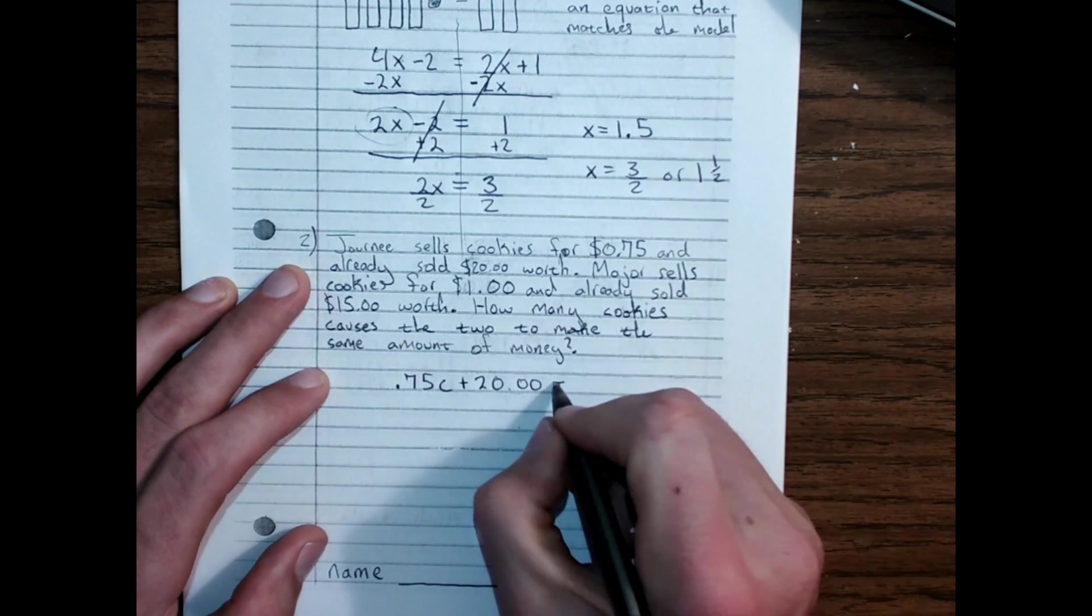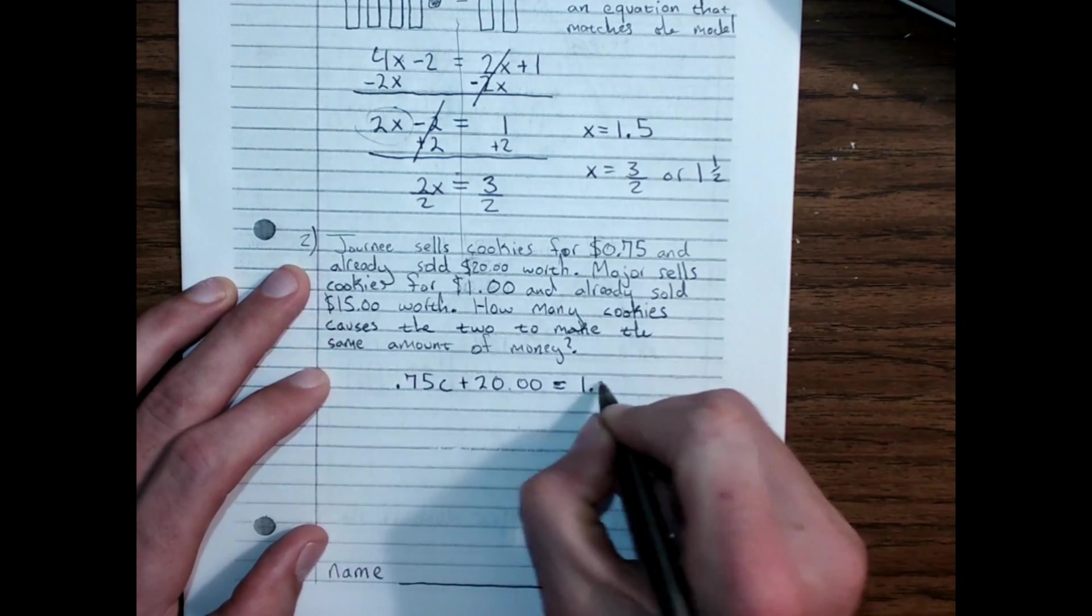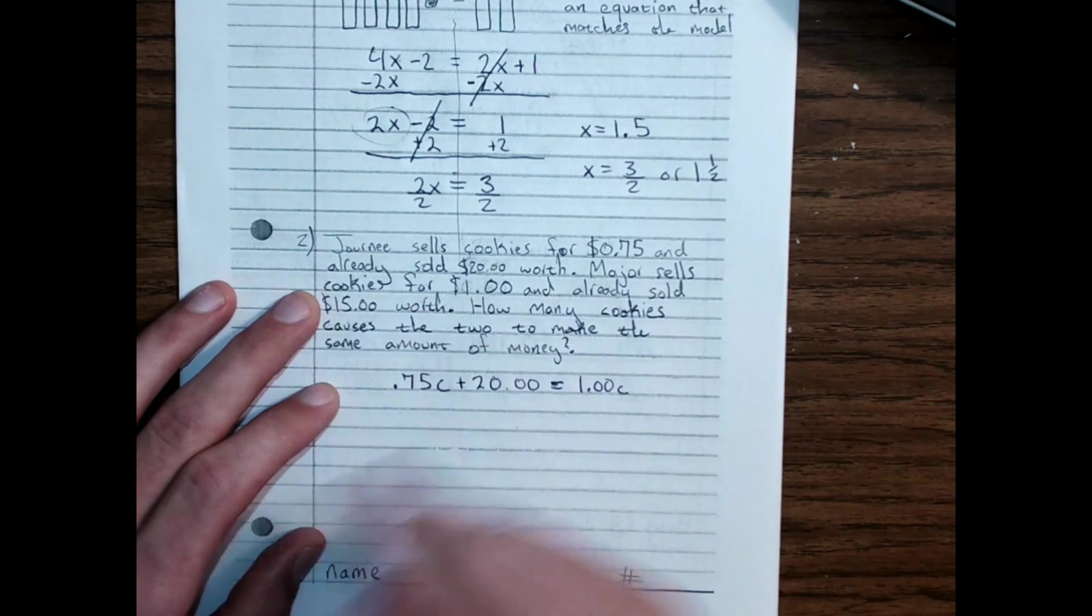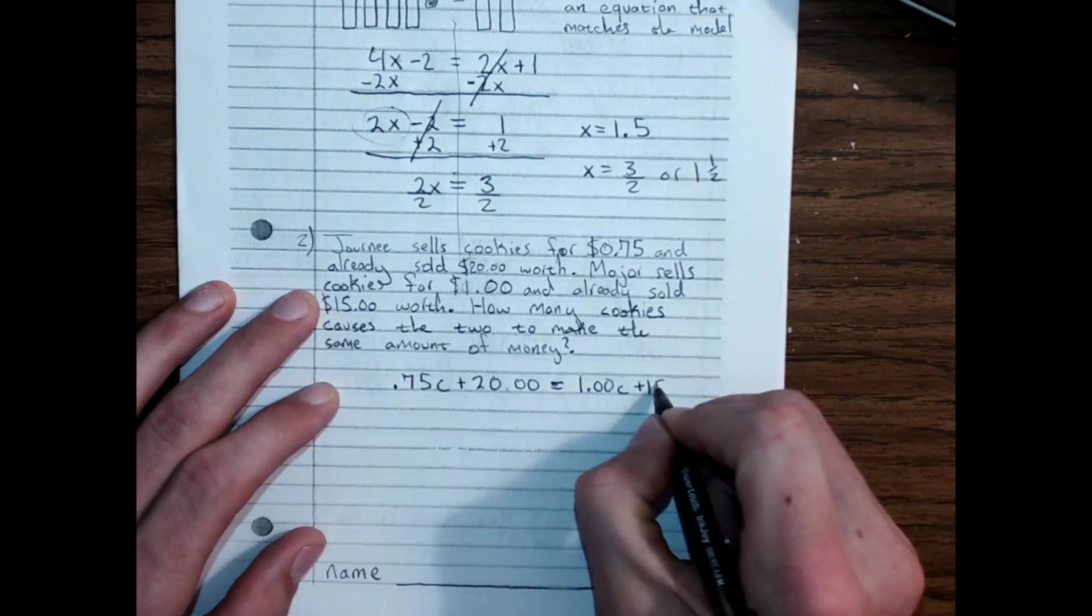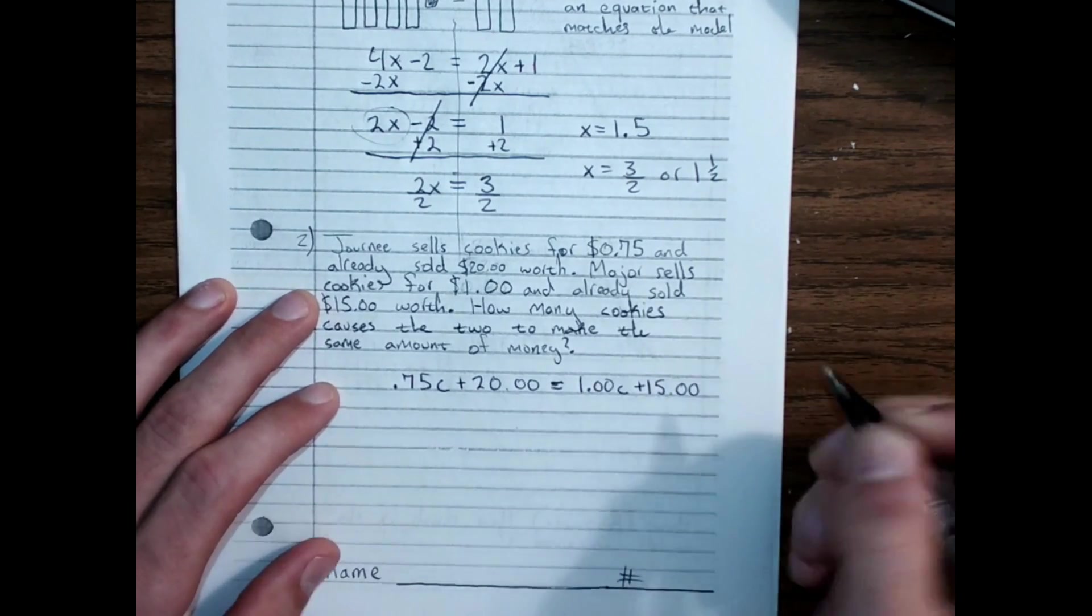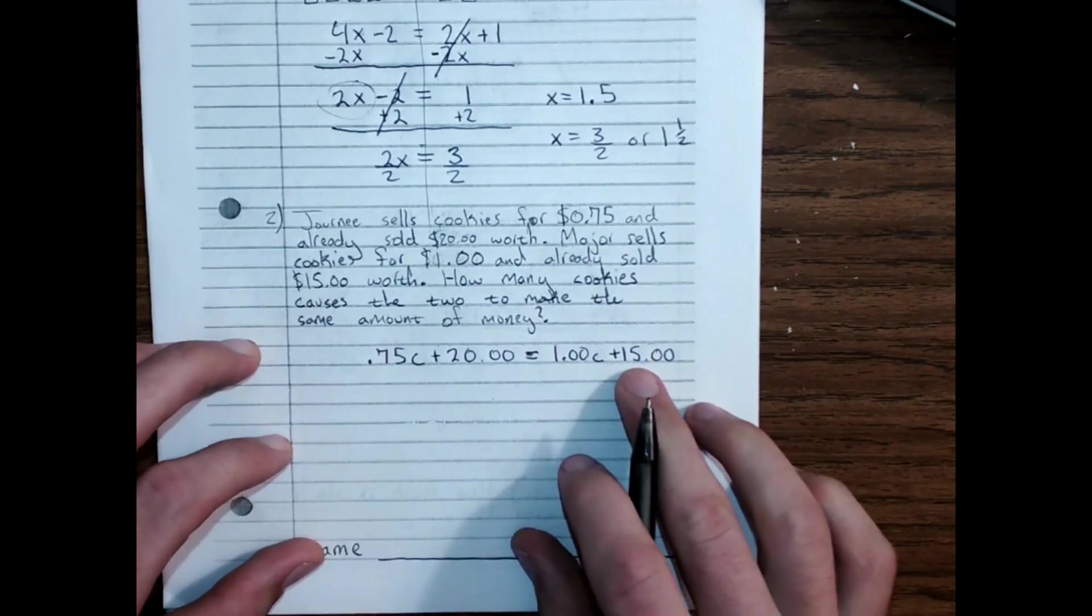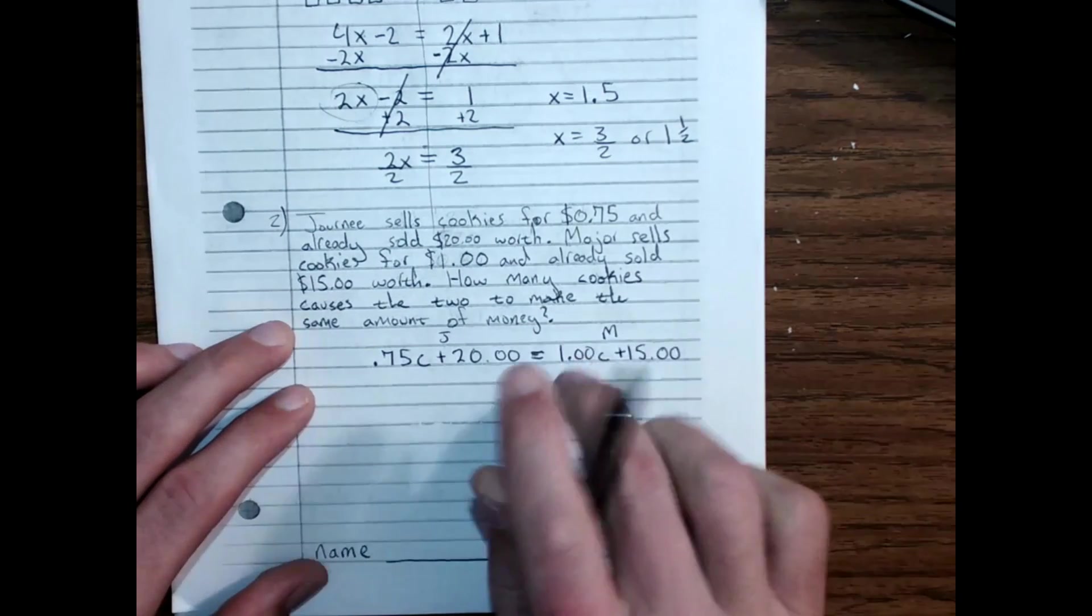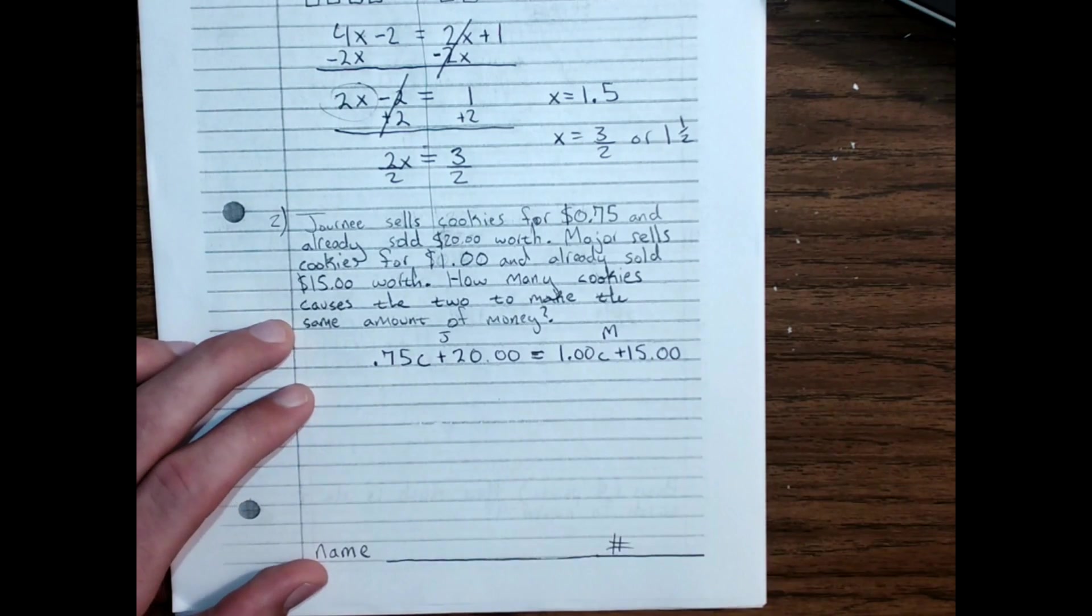Major sells cookies for $1 each. So, $1 times cookies, and has already sold $15 worth, plus $15, gives us an equation for Major. So, here's Journey, here's Major, and now all we have to do is solve until they have the same amount of money.